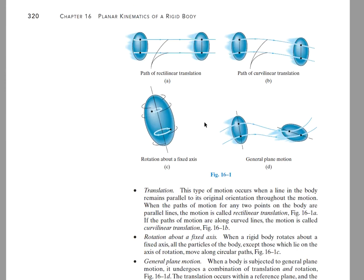In terms of classification, we can have rectilinear translation, where a line fixed to the body remains parallel to itself and points on the body move on straight lines. We can have curvilinear translation, where the fixed line remains parallel to itself and points trace identical but offset curvilinear paths. Then we have rotation about a fixed axis, very common in engineering, and general planar motion, which can be considered a combination of translation and rotation happening simultaneously.